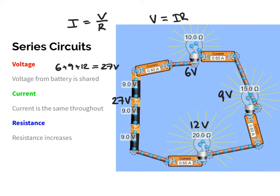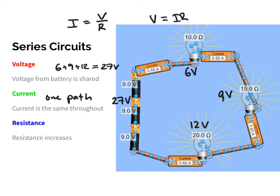Next, let's look at current. In a series circuit, the current is the same throughout because there's only one path. So 0.6 amps has to go through the battery, through bulb one, through bulb two, through bulb three — the current only has one path to follow. The current is based upon the voltage and the total resistance. With 27 volts and three resistors of 10, 15, and 20 ohms, the total resistance is 45 ohms, giving a current of 0.6 amps.